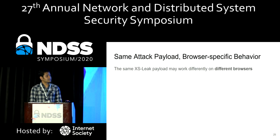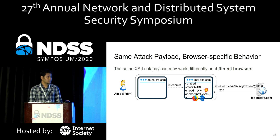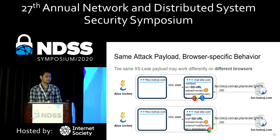The next challenge is that the same attack payload can behave differently across browsers. For instance, the attack payload using the embed tag is applicable only for Firefox and Microsoft Edge — this behavior does not happen in Google Chrome. Since the attacker cannot control which browser the user uses, they need to be prepared for different browsers. To support Chrome as well, the attacker needs an equivalent attack vector — in this case, the link tag, which works similarly to the embed tag in Firefox and Edge.